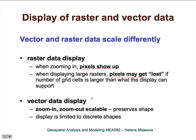With vector data display, zooming in and out is scalable and it preserves the shape. During the last lecture, we showed some conversions between raster and vector data. One reason is that sometimes we want to have raster data represented as vector data because the display scales better.